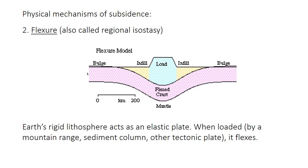The second physical mechanism that can drive subsidence is flexure — the bending or warping of the crust due to the presence of a weight, generally called a load, sitting on top of a particular region of the crust. That load could be a mountain range, a tectonic plate overriding another plate, or even a giant pile of sediment itself. There's a feedback where once you add sediment, it causes the crust to flex a bit, which creates more accommodation space for more sediment to accumulate. In class, we're going to investigate isostasy and flexure in a slightly more quantitative manner.